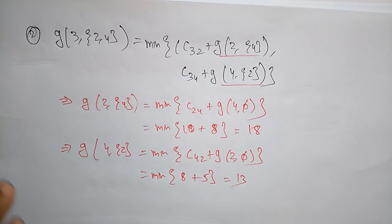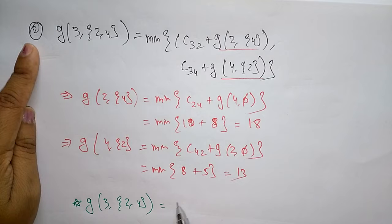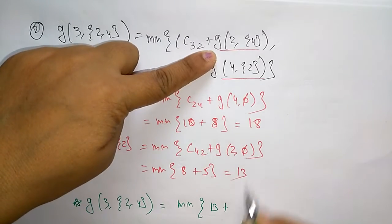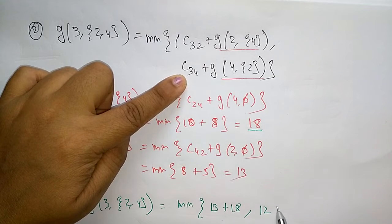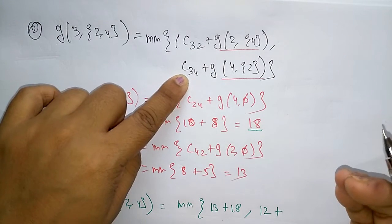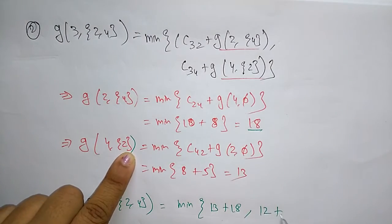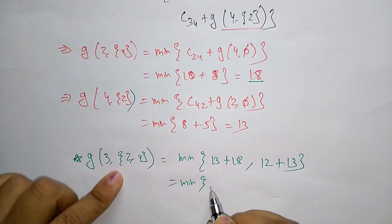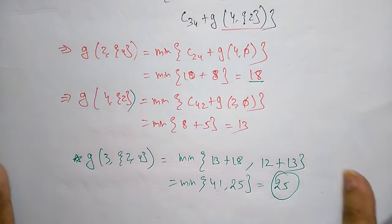Now substituting these values into the second equation for g(3, {2,4}): minimum of c32 (13) plus g(2, {4}) (18) = 31, and c34 (12) plus g(4, {2}) (13) = 25. The minimum of 41 and 25 is 25. So the second value is also 25.